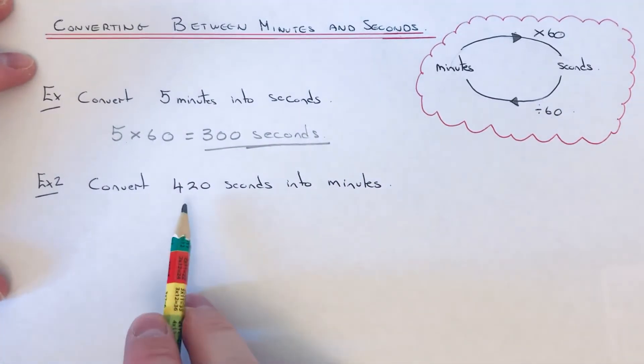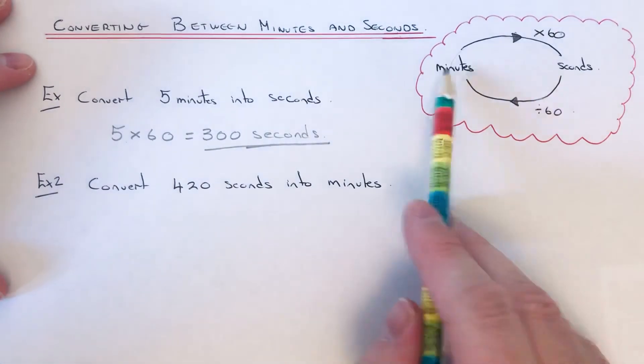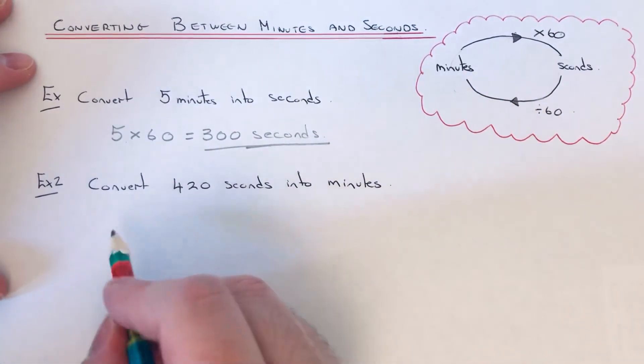Example two then: this time we've got to convert 420 seconds into minutes. So if we're doing seconds to minutes, we're going to divide the number by 60.